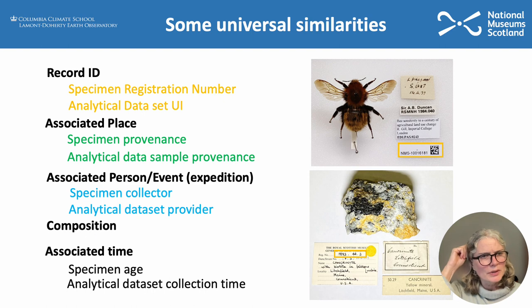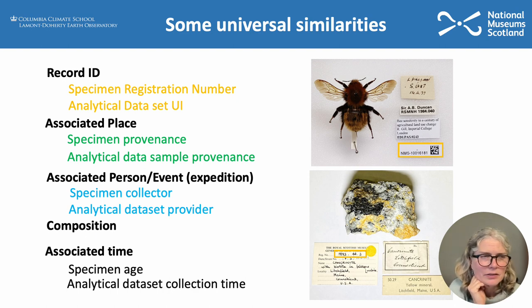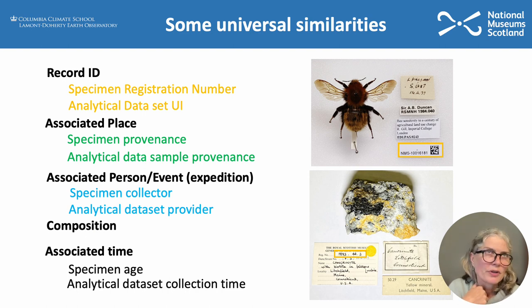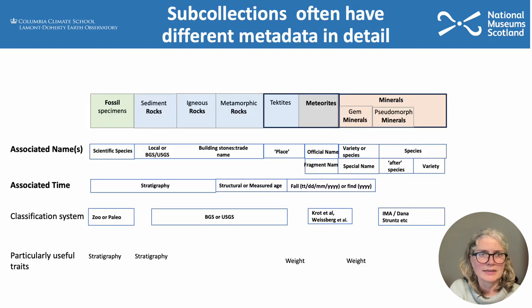At the most simple level, though, all specimens, including Earth science specimens, have things in common. They have record IDs, whether it's an analytical data set or a specimen register number. There's usually a place associated, a person or event associated, a composition, an associated time — that sort of thing. These help share data across all data sets.